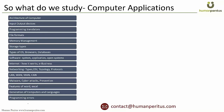Now for our conclusion: any book on computer knowledge should cover these topics — architecture of computer, input/output devices, programming translators, file formats, memory management, storage, operating systems, browsers, databases and their examples, application software, system software, how the internet works, e-business, networks, OSI model, topology, protocols, TCP/IP, LAN, WAN, MAN, malware, viruses, cyber attacks, features of Word and Excel, generations of programming languages and computers, and programming errors.